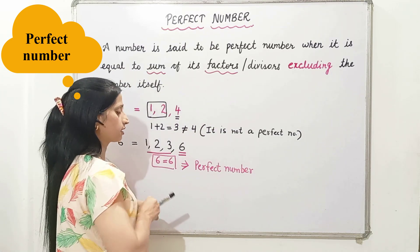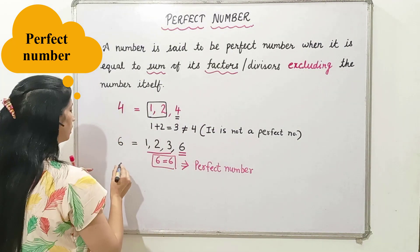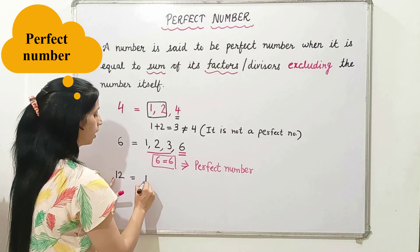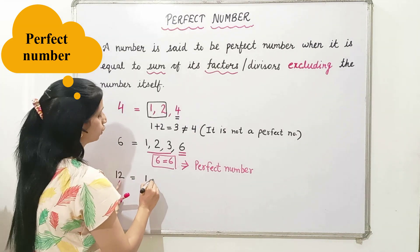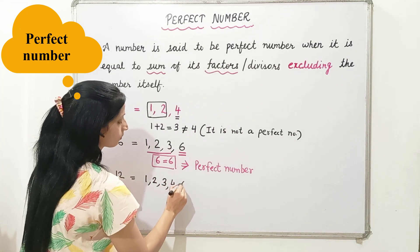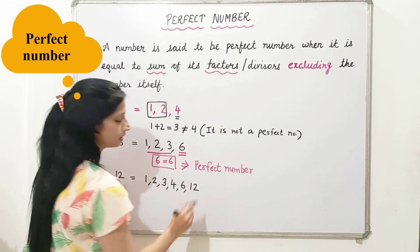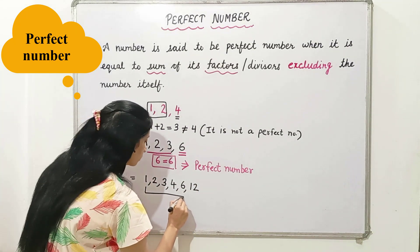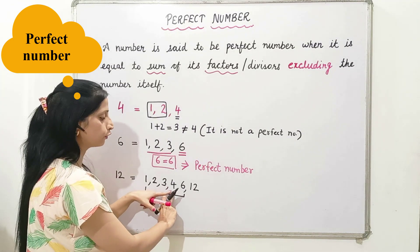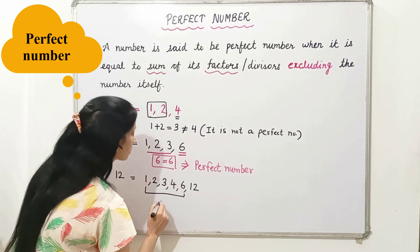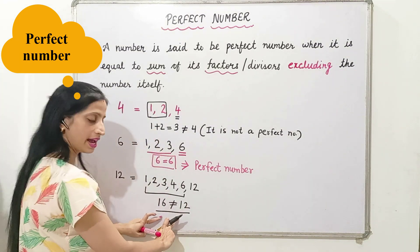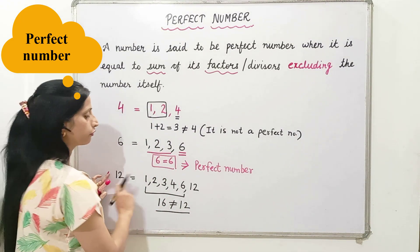Now let's take the number 12. Again, first we write down its factors: 1, 2, 3, 4, 6, and 12. Now let's add these excluding 12: 1 plus 2 is 3, plus 3 is 6, plus 4 is 10, plus 6 is 16. And 16 is not equal to 12. Hence 12 is not a perfect number.